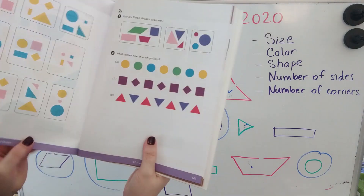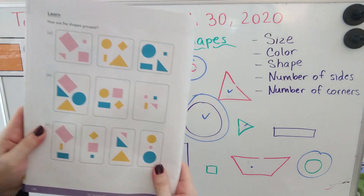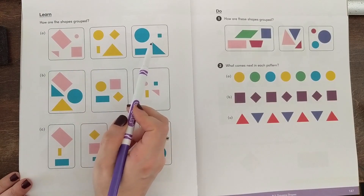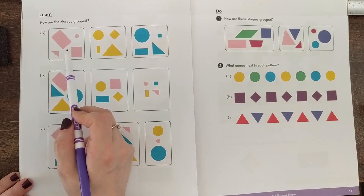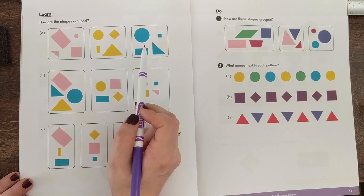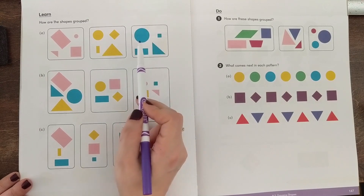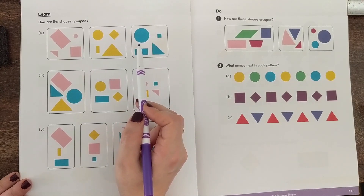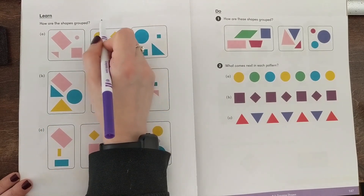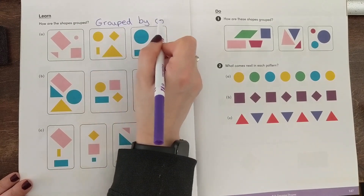Now we're going to look at these shapes and decide how they are grouped. Letter A — I'm looking at these, and I can tell that these are grouped by color, because there are lots of different shapes but they're all the same color. So I'm looking to see what do all of these shapes have in common to know how they are grouped and sorted. The attribute that we used to group these is color, so I would write down grouped by color.